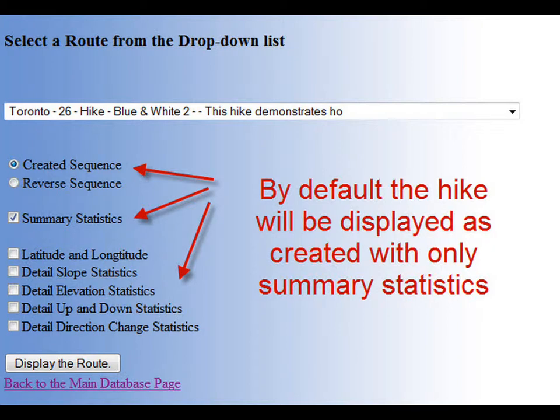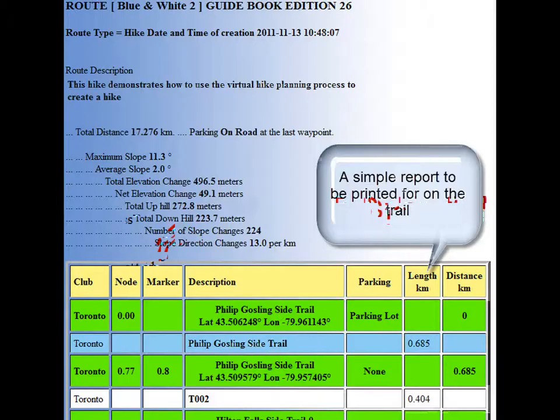You see the default selections in the menu are created sequence and summary statistics. On the trail, I prefer to have at least the latitude and longitude of each waypoint. This helps if you have a GPS and get confused about the direction you're going — we've all done that at one time or another. So I've selected the latitude and longitude. Now click the display the route button. Here we see a simple report for the hike. It has all waypoints and segments, the length of each segment, and a cumulative distance at each waypoint. You can print this to take on the trail. I use Firefox browser, which allows me to shrink the print to a small map size. Hit the back button on your browser to go back to the previous menu.